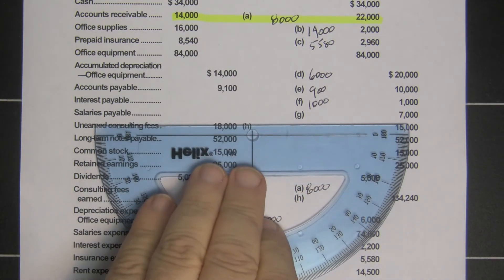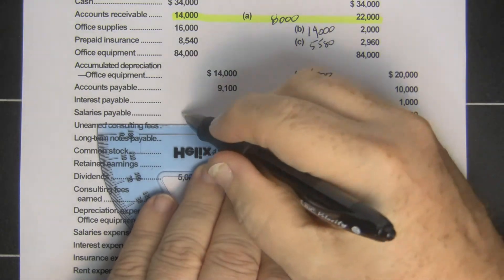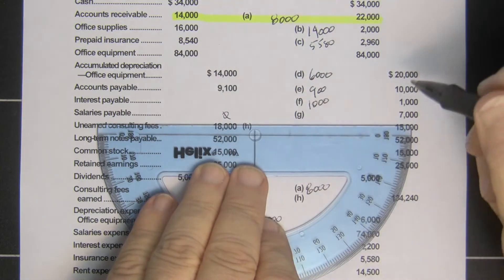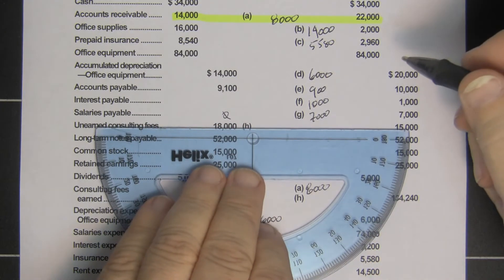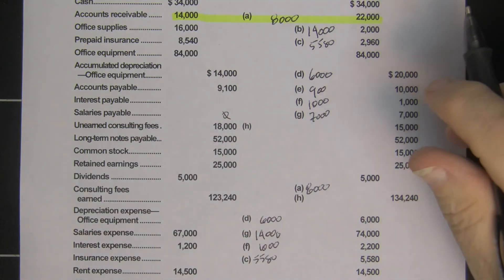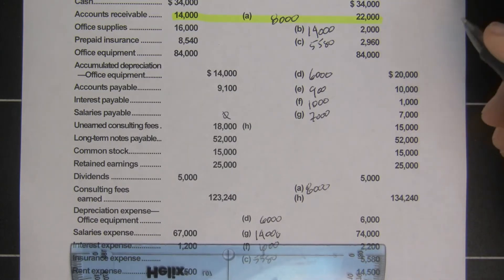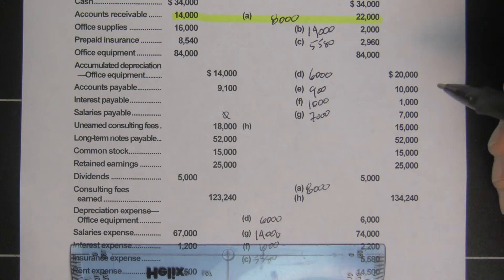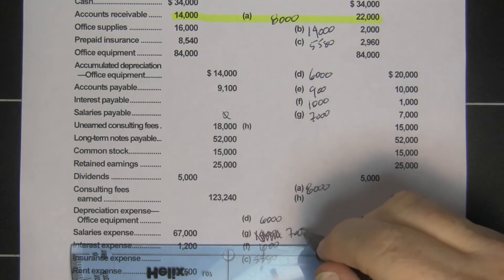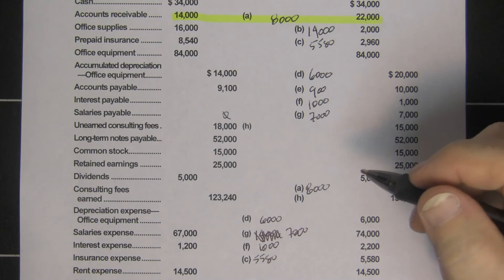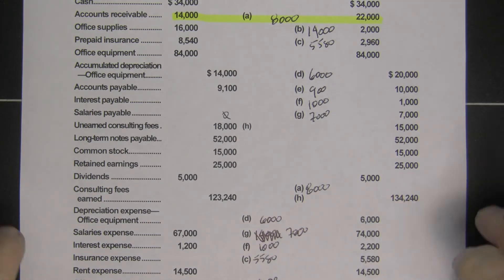Salaries payable went from zero to seven thousand. The only thing that could be linked to salaries payable would be salaries expense of seven thousand dollars. That office supply expense of fourteen thousand was written in the wrong spot — it goes down below.